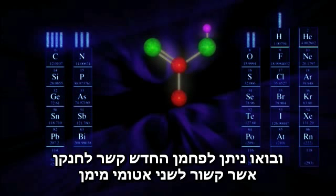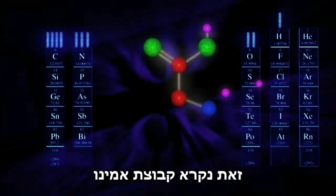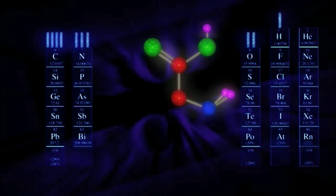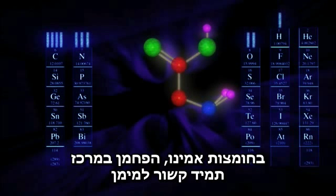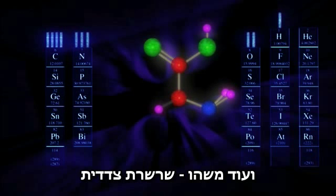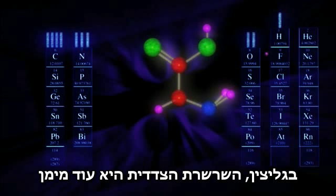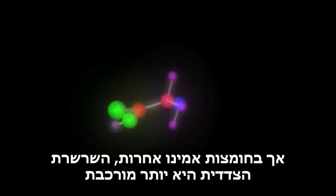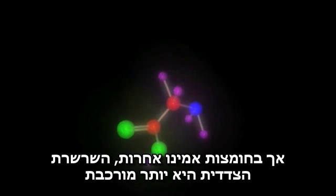And let's give this new carbon atom a bond to a nitrogen atom that is also attached to two hydrogen atoms. This is called an amino group, and is where amino acids get their name. In amino acids, the carbon in the middle is always attached to a hydrogen and something else. In glycine, the other side chain is just another hydrogen. But in other amino acids, the side chain is more complex.